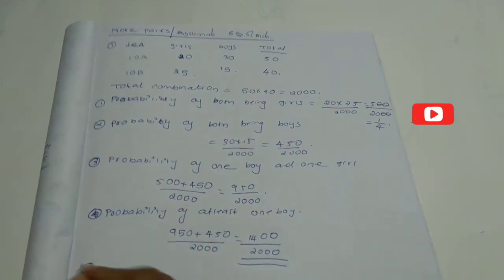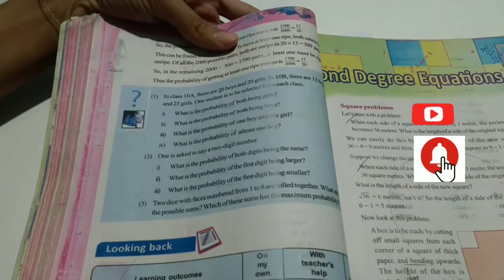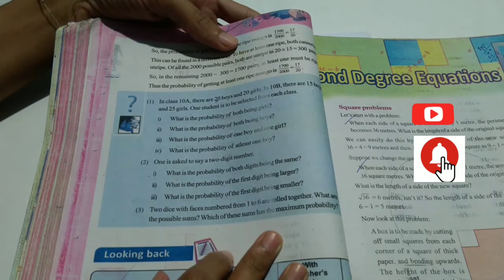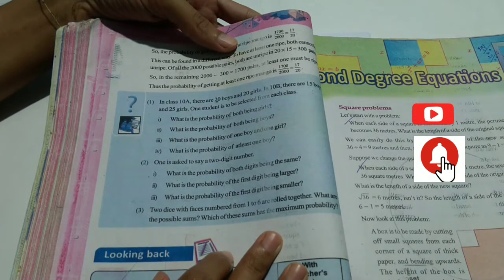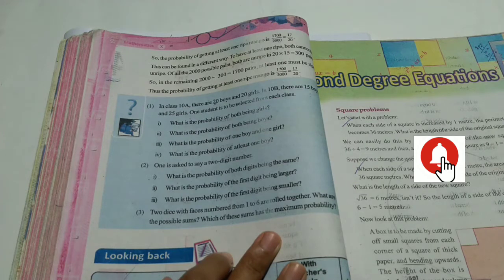We will now see the 10th exercise problem. One is asked to say a two-digit number. What is the probability of both digits being the same? What is the probability of the first digit being larger? What is the probability of the first digit being smaller?